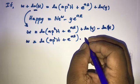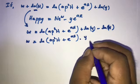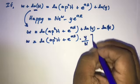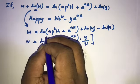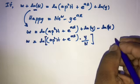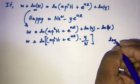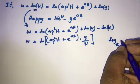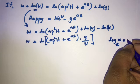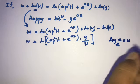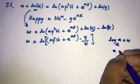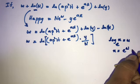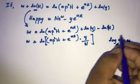The plus becomes multiply and the minus becomes divide. We know that natural log is log, and log is equal to w, so we can write x is equal to e to the w.